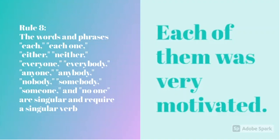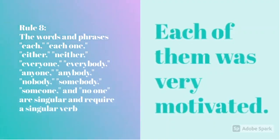Rule 8 is, the words and phrases each, each one, either, neither, everyone, everybody, anyone, anybody, nobody, somebody, someone, and no one are singular and require a singular verb. An example is, each of them was very motivated. Here, we have used each, so the verb is was.